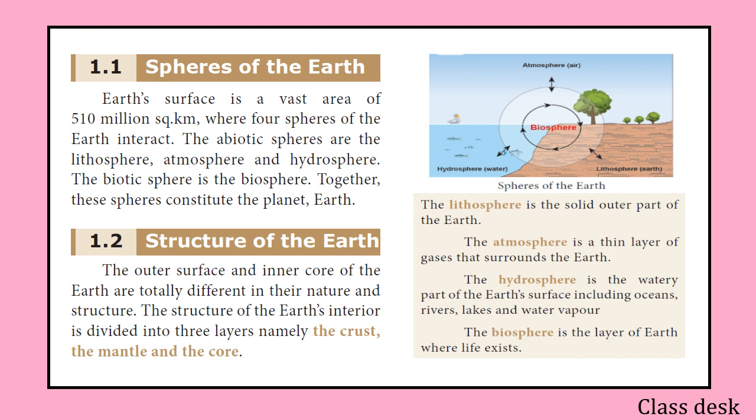The lithosphere is the solid outer part of the earth. The atmosphere is the thin layer of gases that surrounds the earth. The hydrosphere is the watery part of the earth's surface, including oceans, rivers, lakes, and water vapor. The biosphere is the layer of earth where life exists.